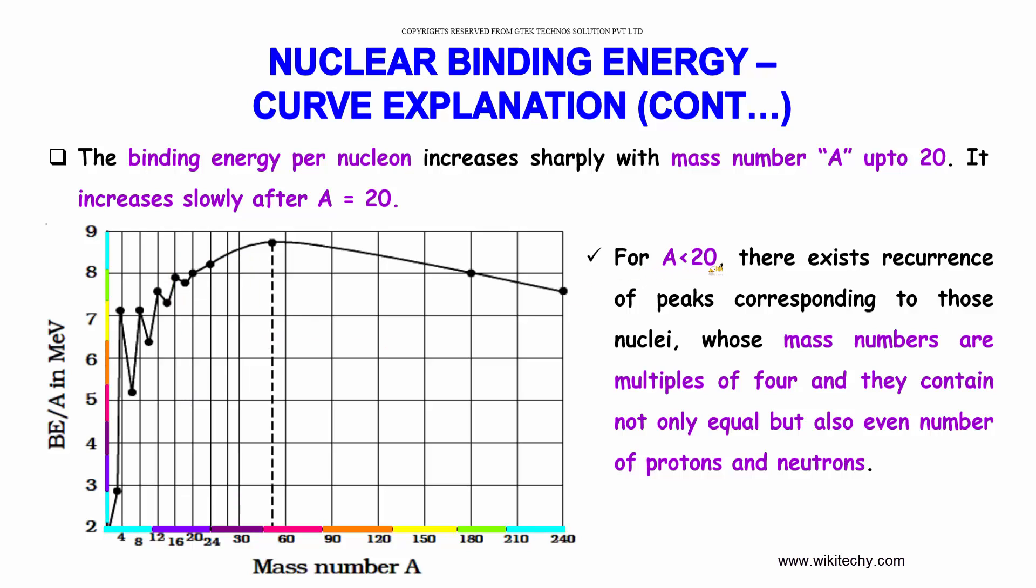For A less than 20, there exists recurrence of peaks corresponding to those nuclei whose mass numbers are multiples of 4 and they contain not only equal but also even number of protons and neutrons.